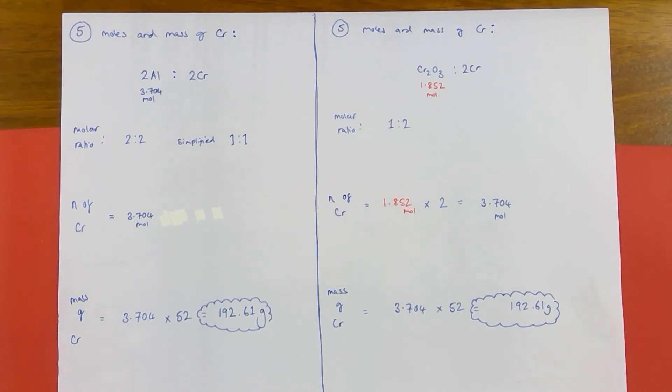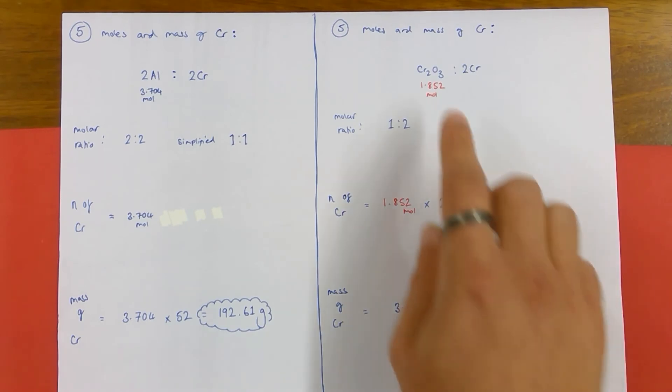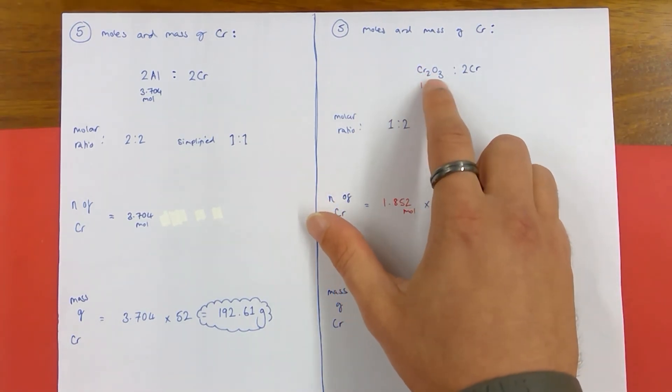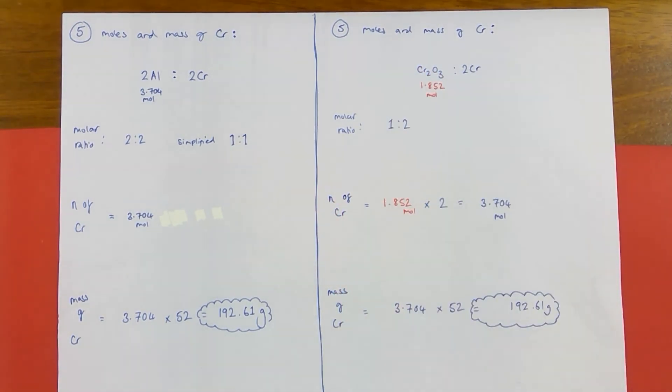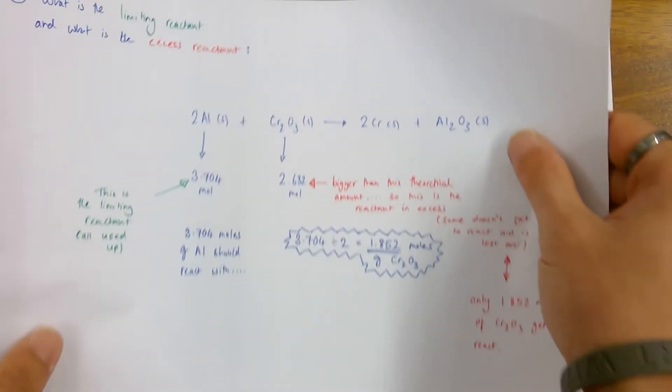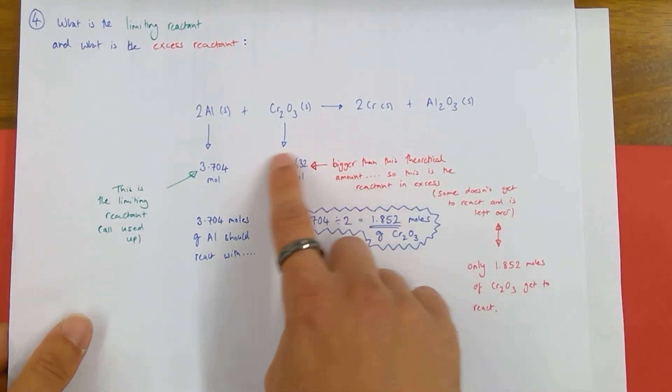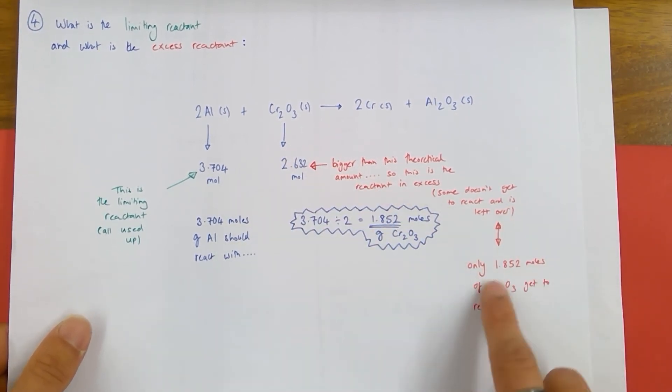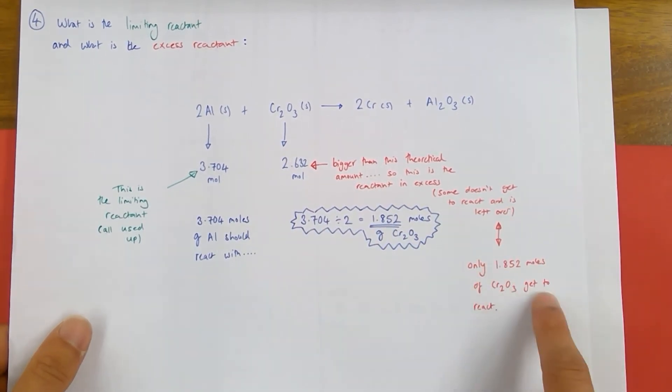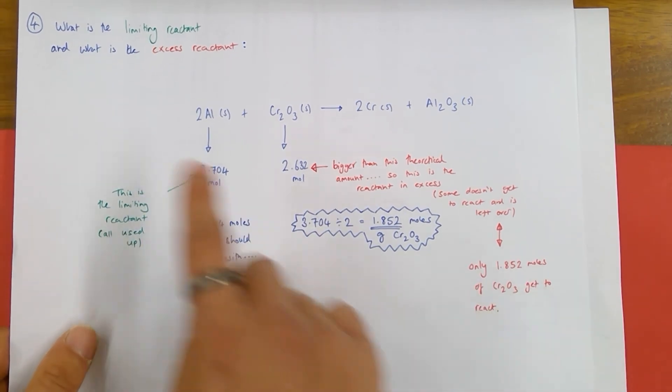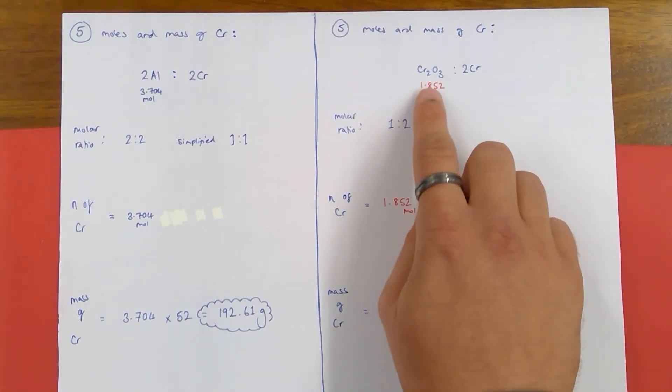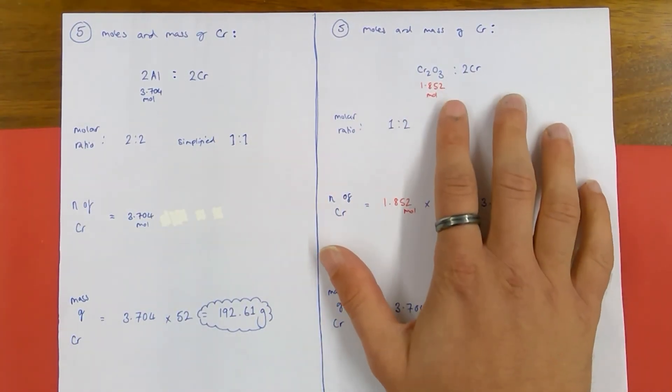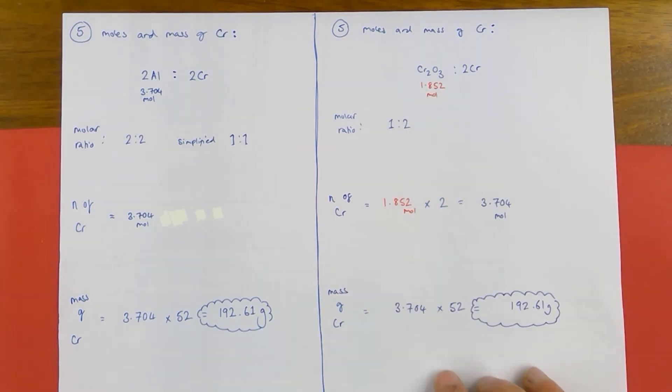What would happen if I actually used the other reactant instead of the aluminium to do this? I'm going to talk about the chromium three oxide. Well, I know that from my excess and limiting that not all of the chromium three oxide is actually going to react. Some is left behind, some is left over and isn't used at all. Only 1.852 moles of chromium three oxide actually gets to react with that amount of aluminium. So that's the amount I bring forward into my final step. The 1.852 moles of chromium three oxide that actually reacted.